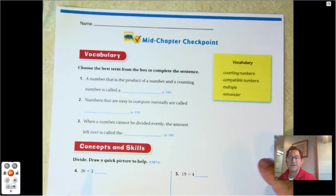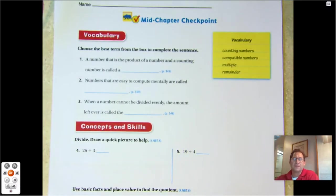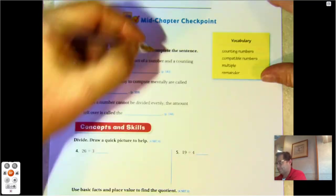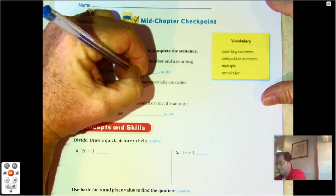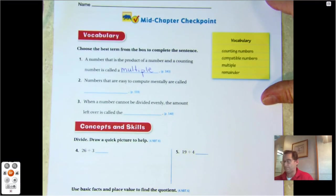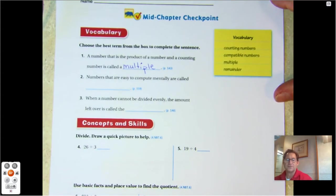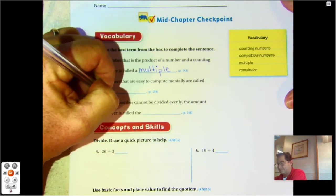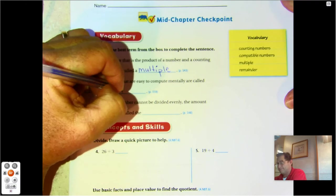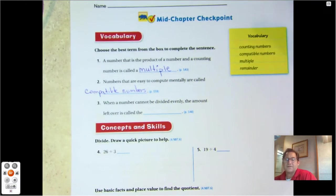Alright, so we're doing the chapter four mid-chapter checkpoint. Number one: a number that is the product of a number and a counting number is called a multiple. Numbers that are easy to compute mentally are called compatible numbers. When a number cannot be divided evenly, the amount left over is called the remainder.